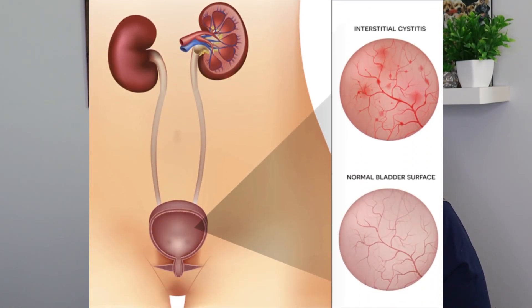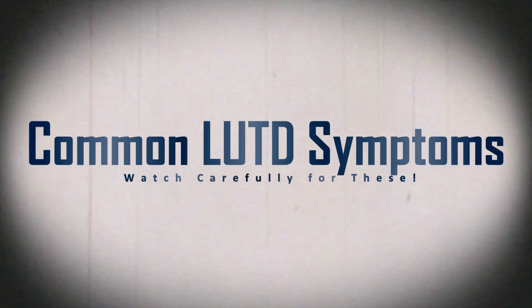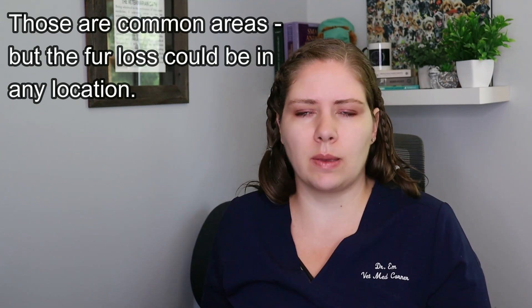So what is feline idiopathic cystitis? The closest human equivalent would be interstitial cystitis, and people dealing with that will report how excruciatingly painful it is. Some of the symptoms commonly noted in cats with lower urinary tract disease include increased urgency to urinate, pain when urinating, and excessive grooming around the abdomen or back end, causing fur loss. You might also notice house soiling, where your cat is eliminating outside of the litter box.